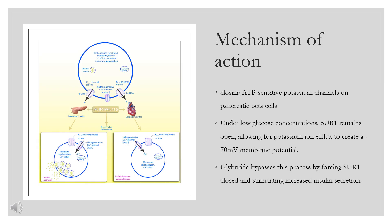Pharmacodynamics. Chlorpropamide, a sulfonylurea anti-diabetic agent, is used with diet to lower blood glucose levels in patients with diabetes mellitus type 2. Chlorpropamide is twice as potent as the related second-generation agent glipizide.